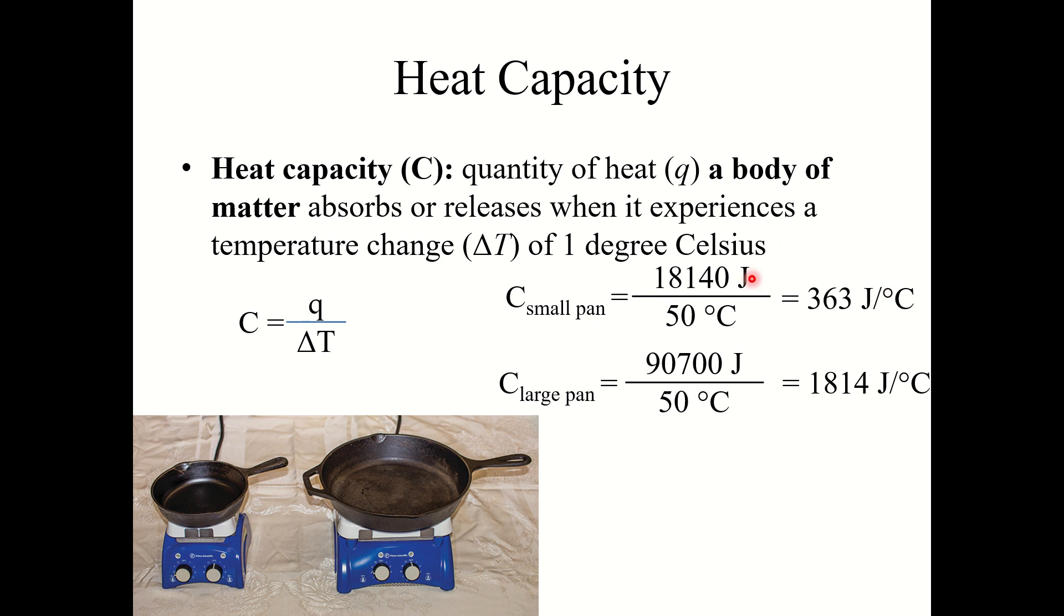So the small frying pan has a heat capacity of 363 joules per degree Celsius. It takes 363 joules of heat to increase its temperature one degree Celsius. The large frying pan has a heat capacity of 1814 joules per degree Celsius, meaning it takes 1814 joules to raise this frying pan one degree Celsius.